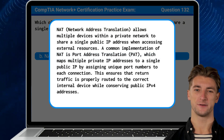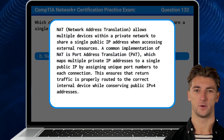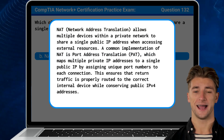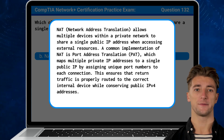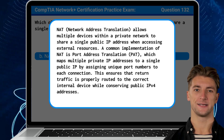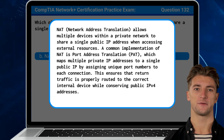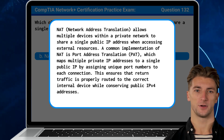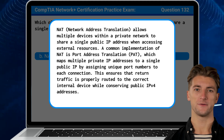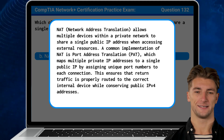NAT, or Network Address Translation, allows multiple devices within a private network to share a single public IP address when accessing external resources. A common implementation of NAT is Port Address Translation, or PAT, which maps multiple private IP addresses to a single public IP by assigning unique port numbers to each connection. This ensures that return traffic is properly routed to the correct internal device while conserving public IPv4 addresses.